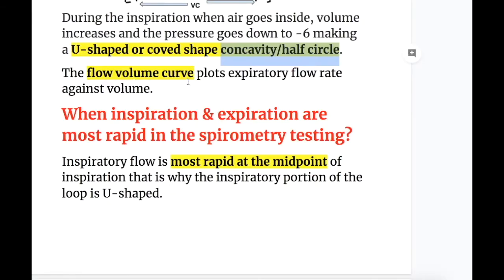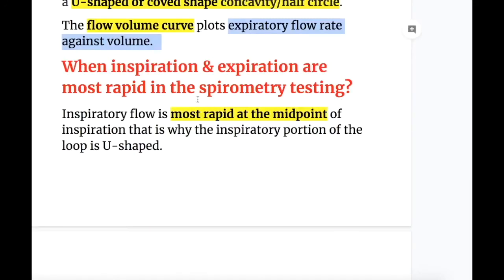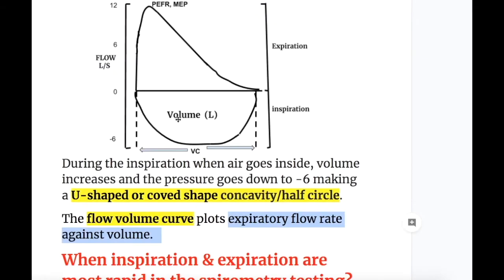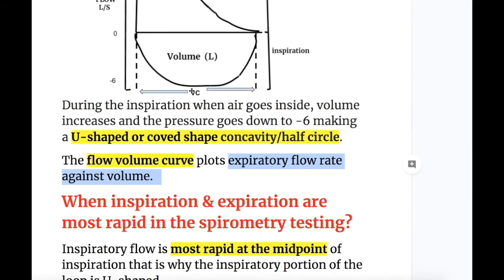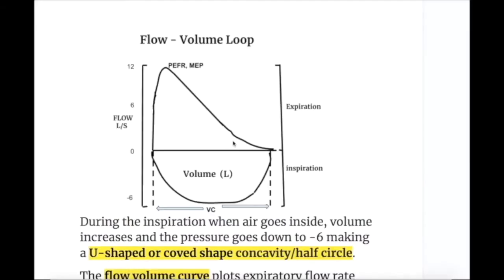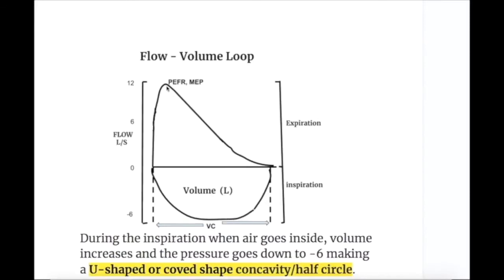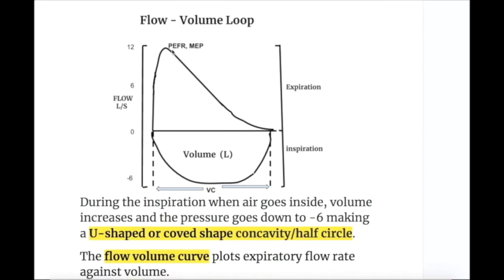The flow-volume curve plots expiratory flow rate against volume. When inspiration and expiration are most rapid in spirometry testing, inspiratory flow is most rapid at the midpoint of inspiration — that is why it makes a U shape in the loop. During the expiratory phase, the high peak flow rate occurs at the start of expiration and then flow rate falls progressively.